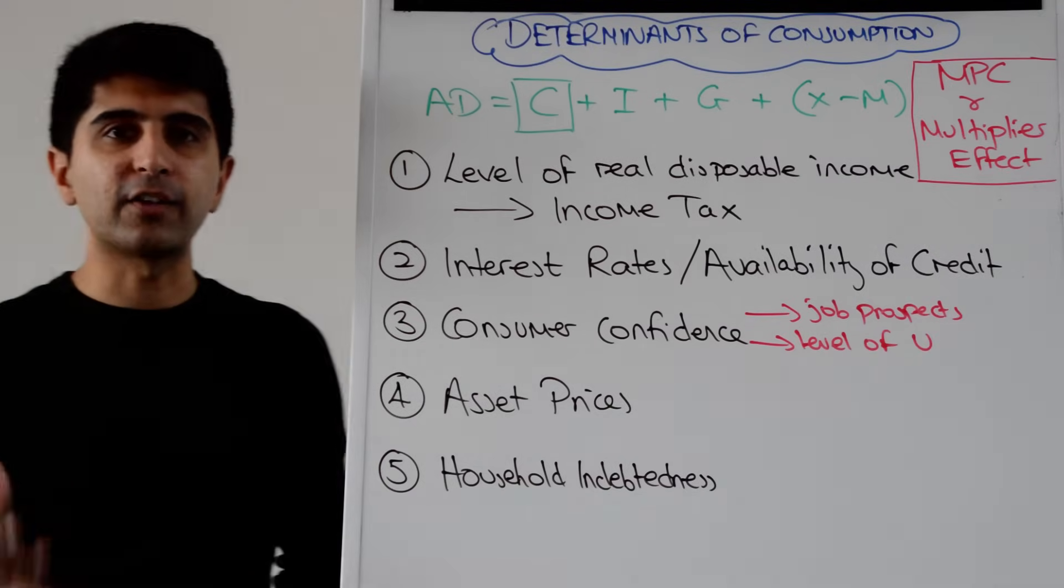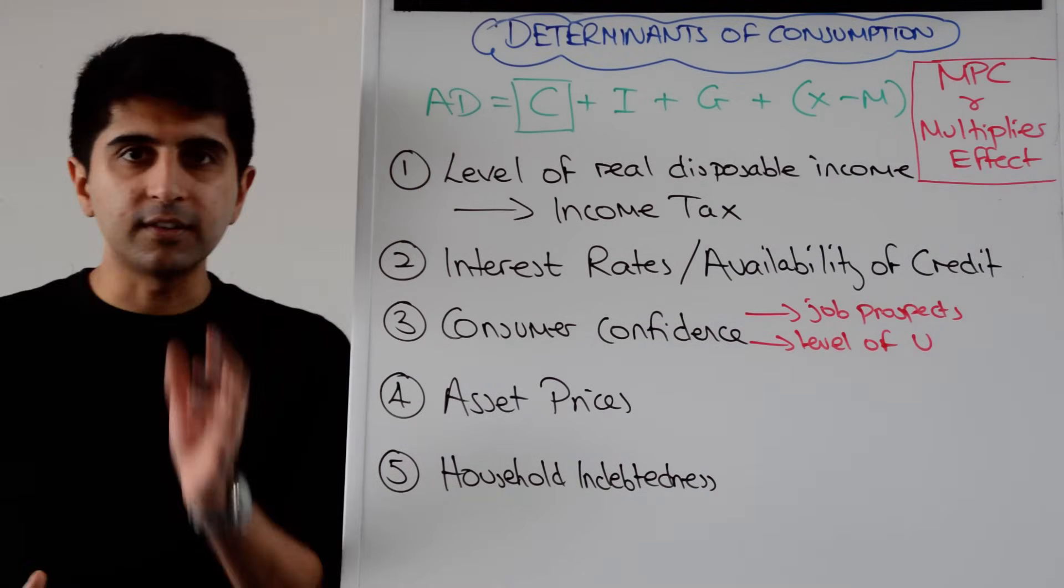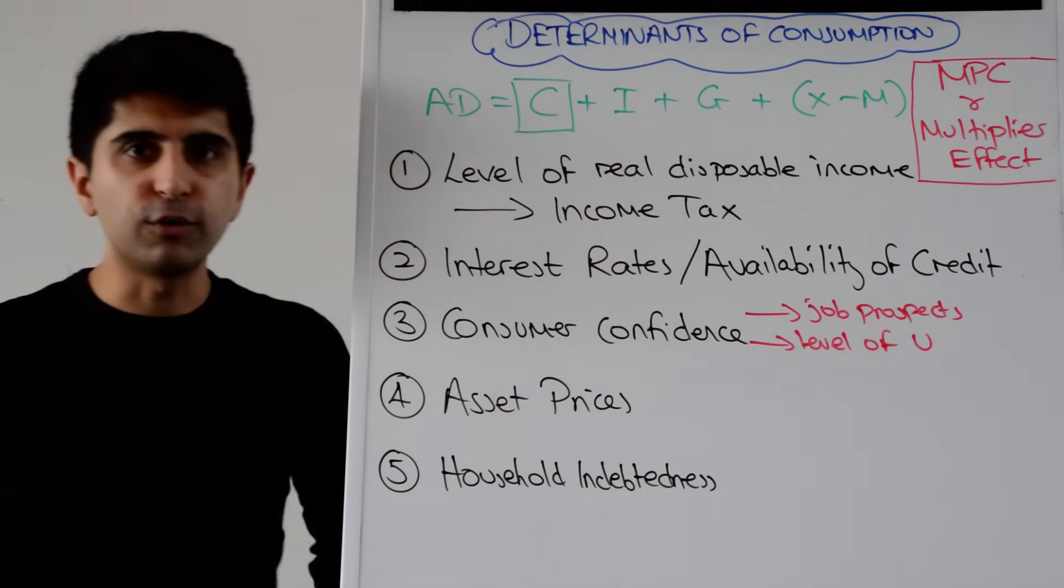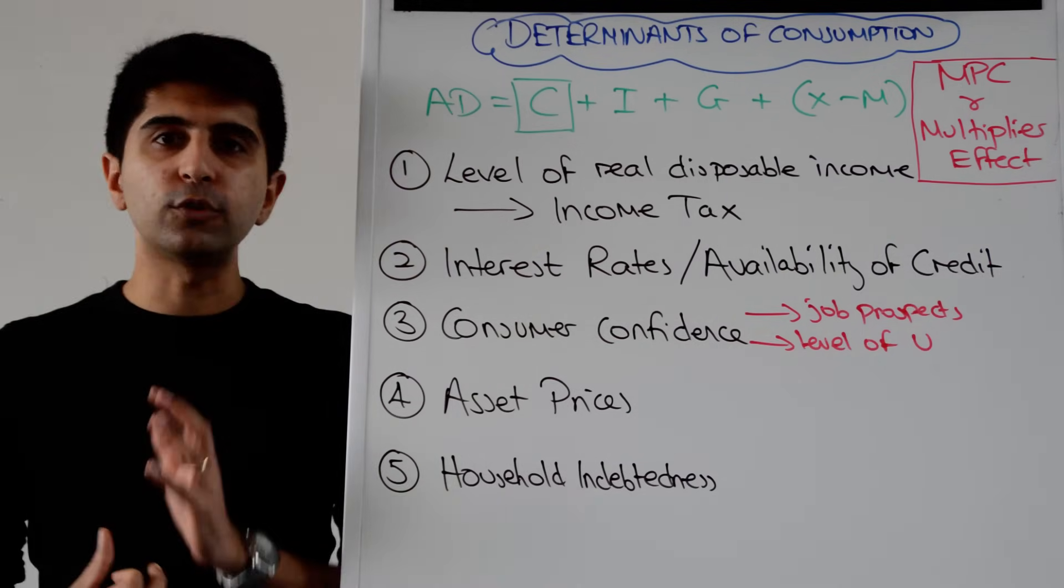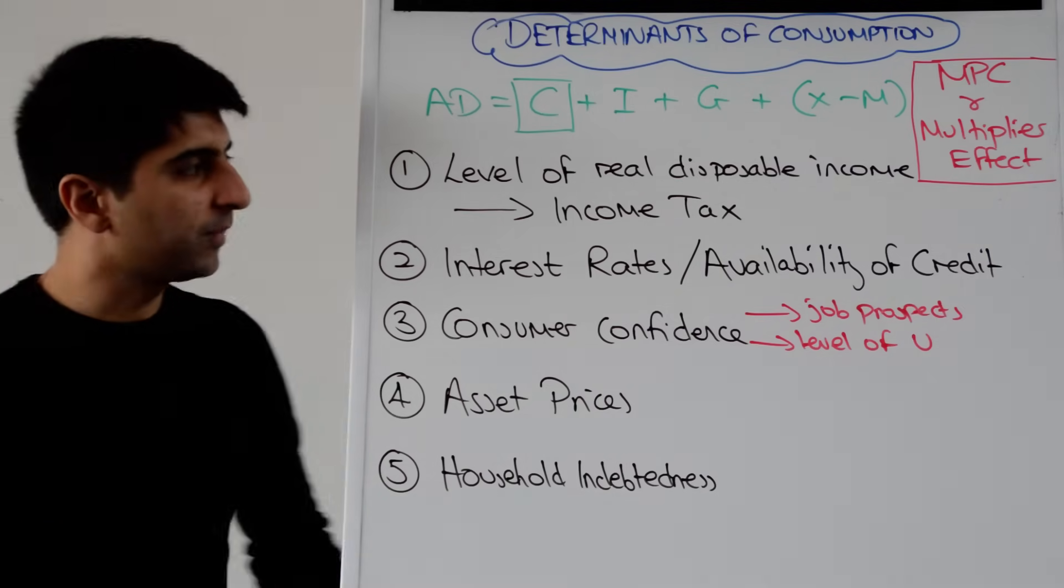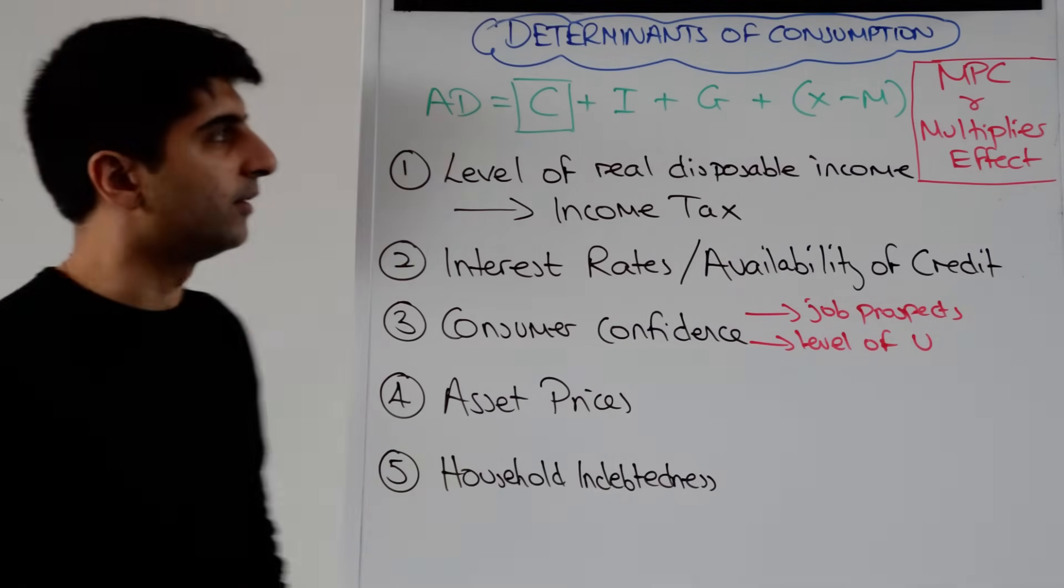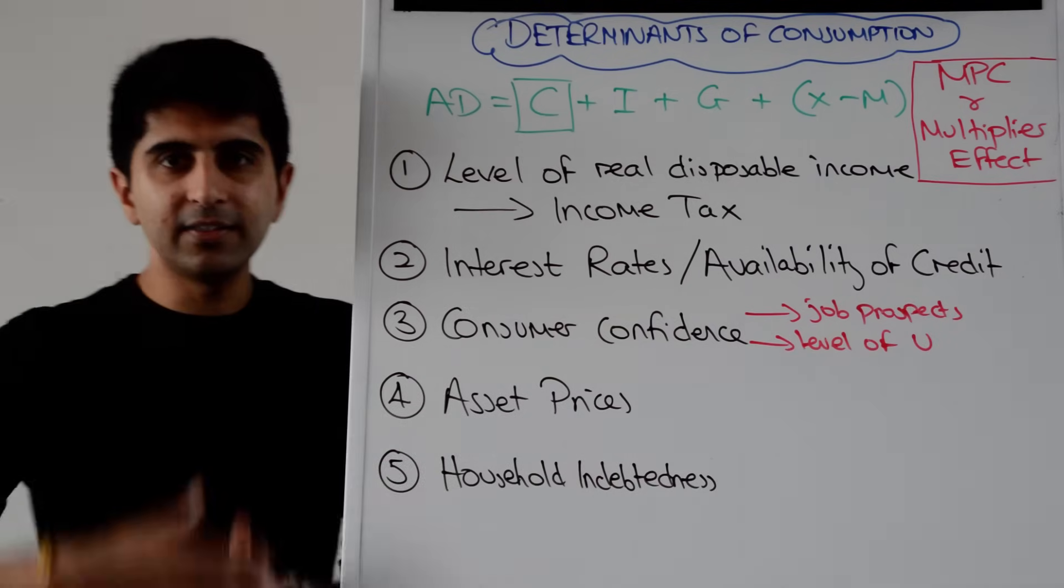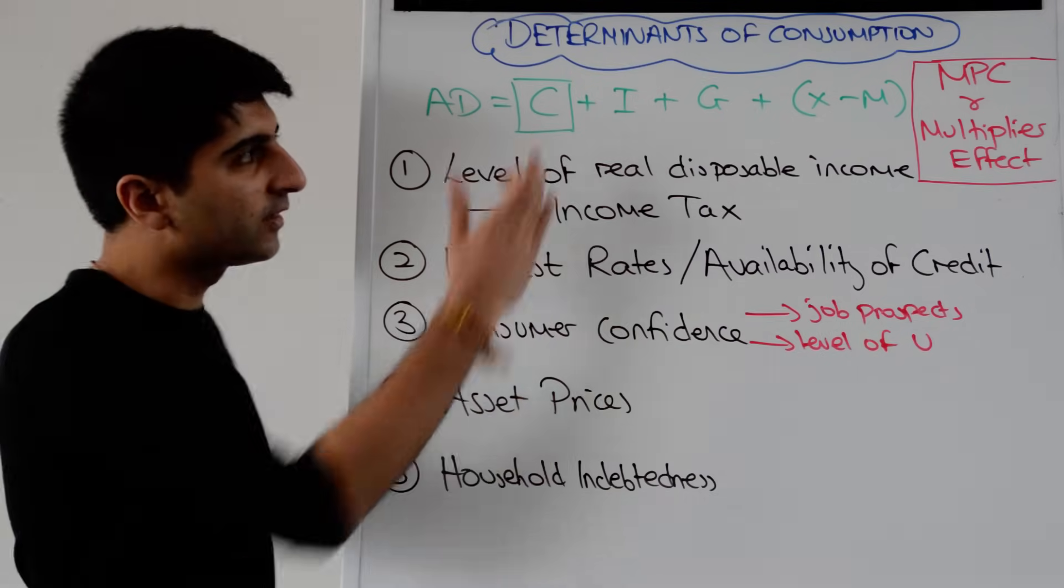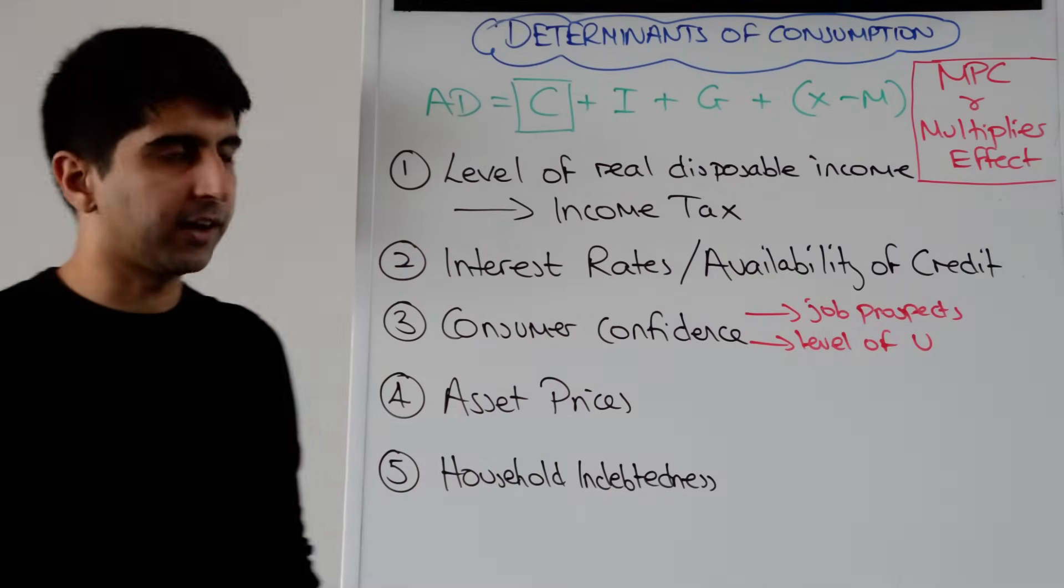Remember what the equation is for aggregate demand. Aggregate demand is C plus I plus G plus X minus M. In this video we are going to look at reasons why consumption can increase or decrease for reasons independent of the price level. So nothing to do with the price level, other reasons. So these are all factors that can then shift aggregate demand right or left as a result of influencing C in the aggregate demand equation.